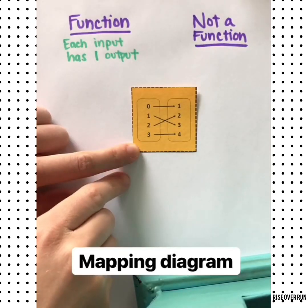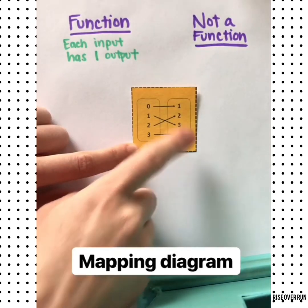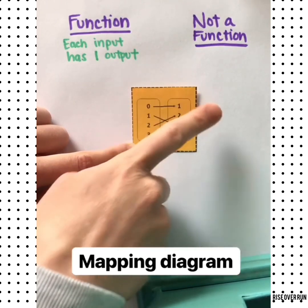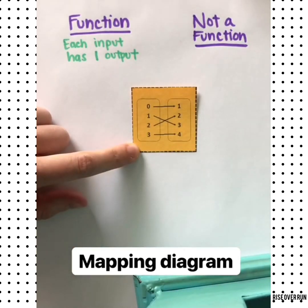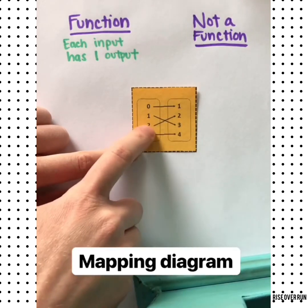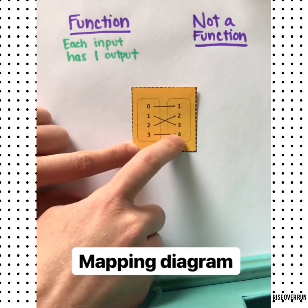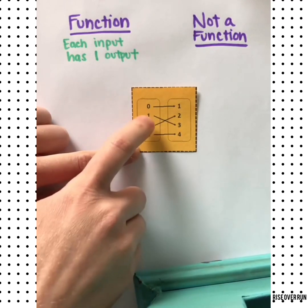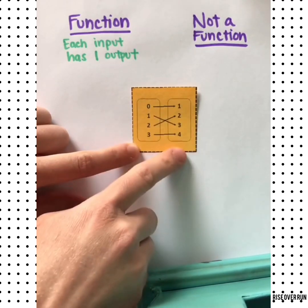Let's look at a mapping diagram. In this setup, the x's are on the left and the y's are on the right. We can follow each x to see which y corresponds with it. In this example, each input has one output, so that's a function.